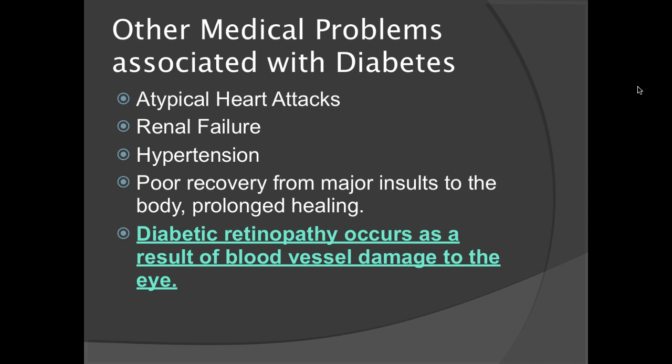Other medical problems associated with diabetes: they generally tend to have atypical heart attacks, meaning they generally don't present the same way as other cardiac patients — they usually don't have classic chest pain. Renal failure is very commonly associated with diabetes, as is hypertension. There is poor recovery from major insults to the body and prolonged healing — wounds will take a very long time to heal, if they even heal at all. If you notice old-looking wounds not in the proper stages of healing, that's a telltale sign. Diabetic retinopathy occurs as a result of blood vessel damage to the eye, so vision disturbances are pretty common with diabetics.